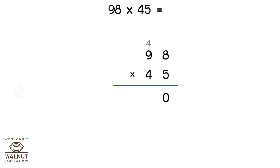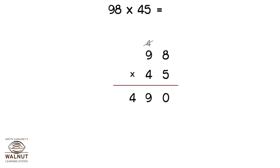Here we add the 4, which becomes 49. Since there are no more digits to multiply, we write 49 below the line. Since we have already added the 4, we strike it out.